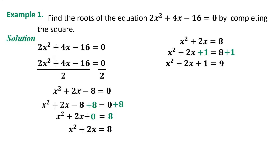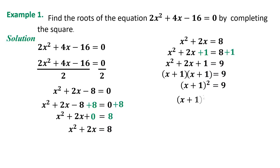We need to factor x² + 2x + 1. The factors are (x + 1)(x + 1) = 9. Simplifying, (x + 1)² = 9. Since we are looking for the value of x, the square makes the equation complicated, so we need to remove the square using the method of extracting the square root.